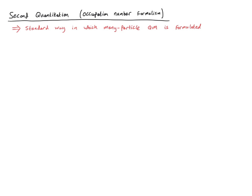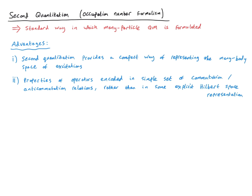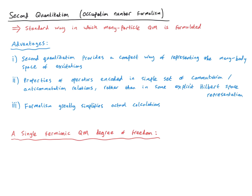Second quantization is the standard way in which many-particle quantum mechanics is formulated. It is elegant and it is efficient. It is a formulation based on the algebra of ladder operators, like we saw for the quantum harmonic oscillator in the first lecture, and as we've been using in the last few weeks to describe spin systems. We've already implicitly been using some kind of second quantization when we were talking about those spin systems, but now we're going to put it on a more fundamental footing. Second quantization provides a compact way of representing the many-body space of excitations. Properties such as the fermionic wavefunction antisymmetry and the Pauli principle are realized automatically and effortlessly within this framework.